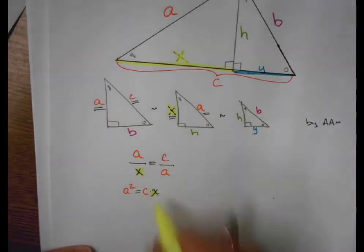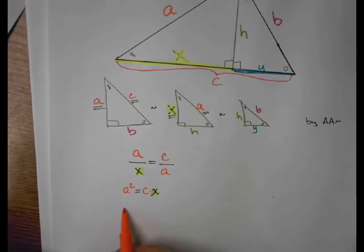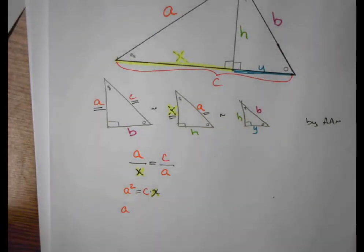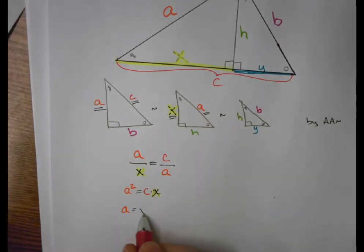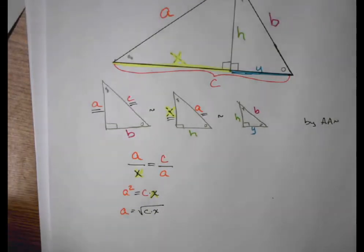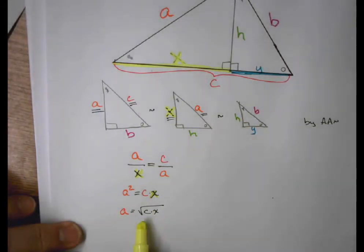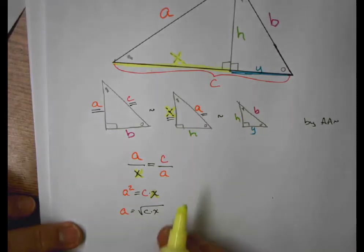And then, of course, I can solve that further to say that A is equal to square root of C times X. What does that mean, though? Well, you'll remember when we did geometric mean a little bit ago that we can find the geometric mean of two numbers by multiplying them and taking the square root. So really, this means that A is the geometric mean between X and C.